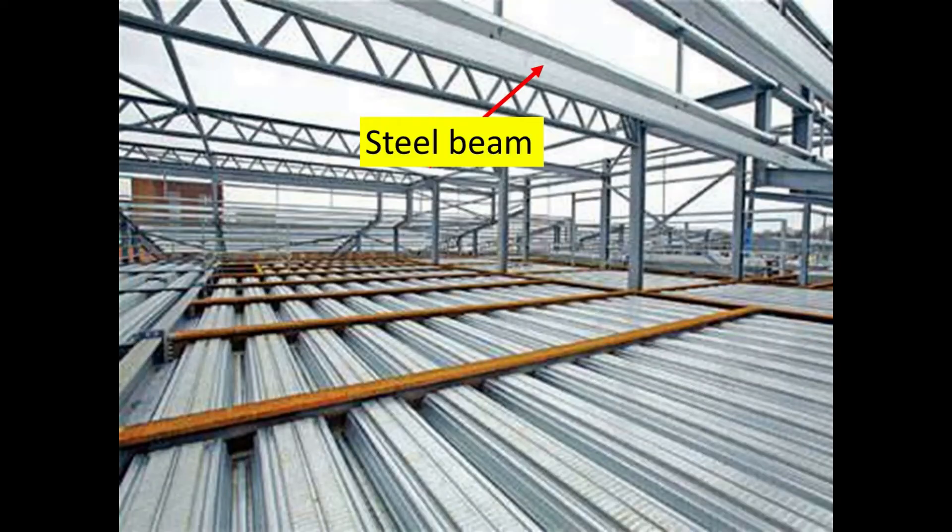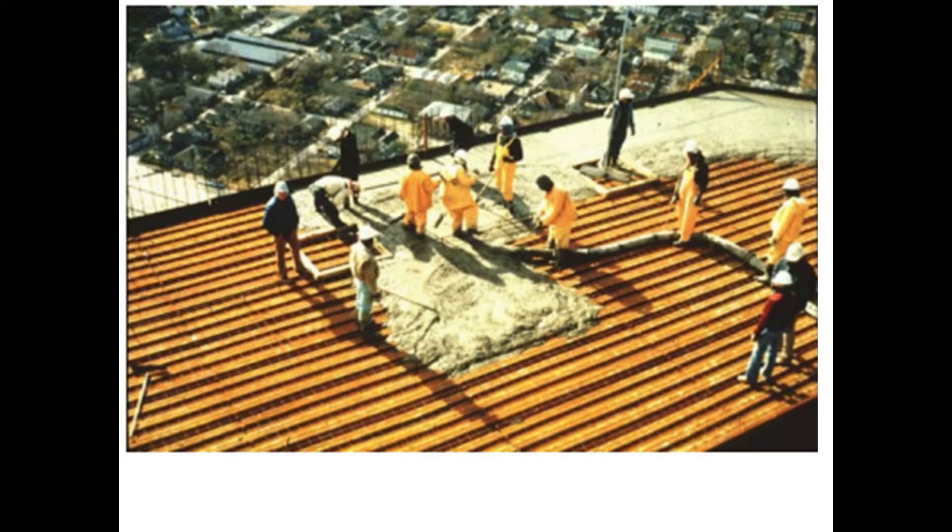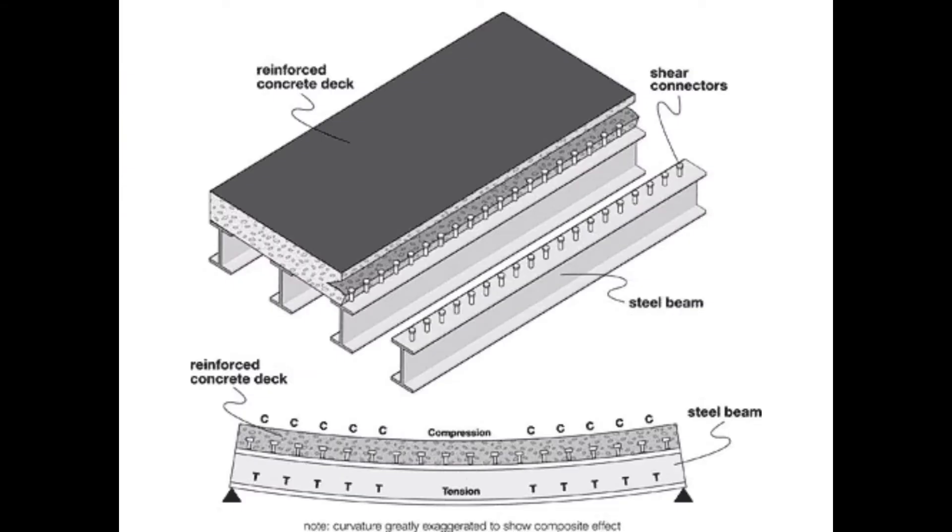We should acknowledge that the steel beam will undergo two stages. The first is during construction, in which the steel beam, wire mesh will be installed and followed by the installation of wet concrete, and the second is during composite stage.